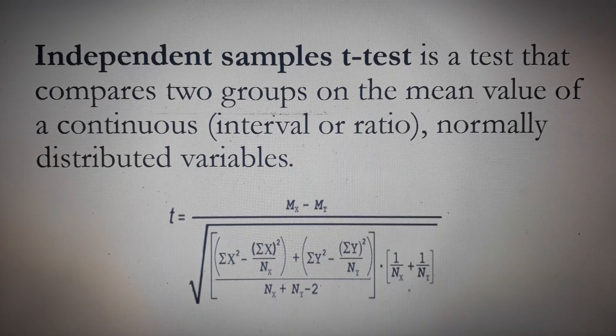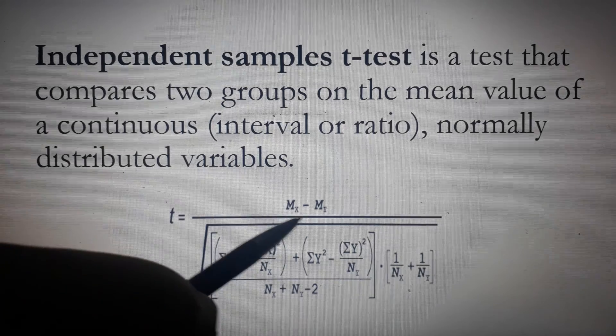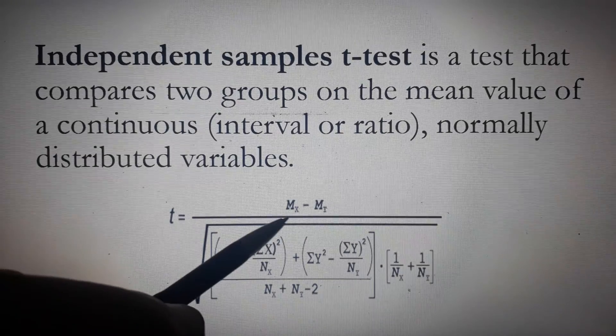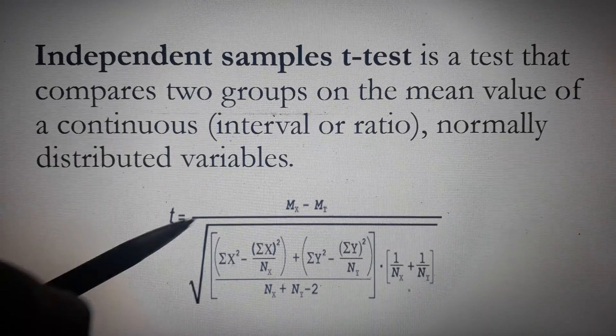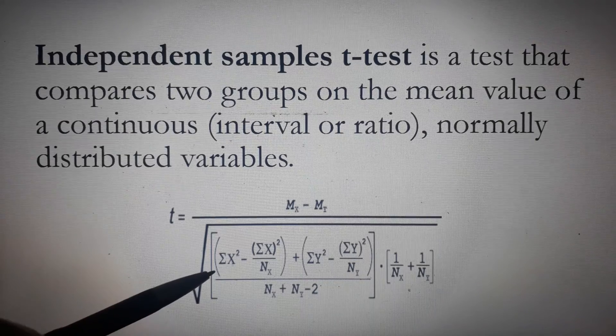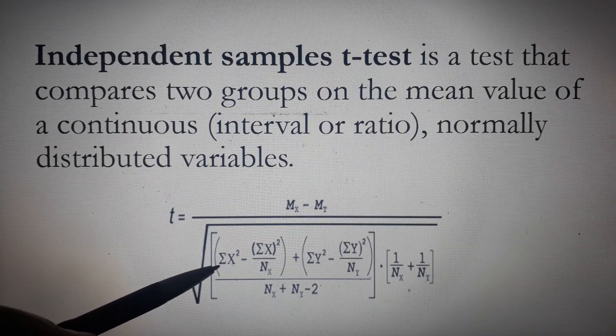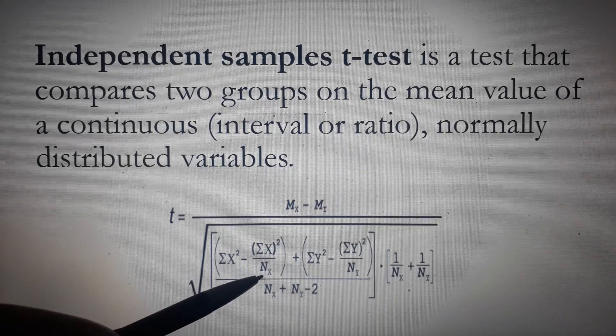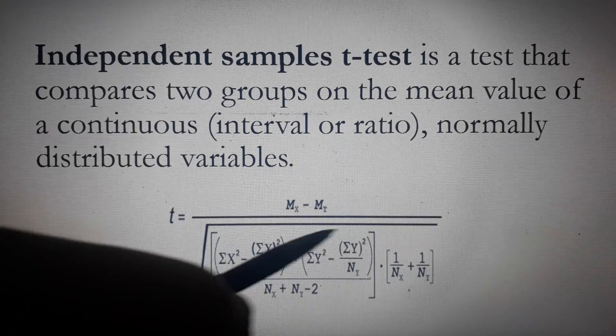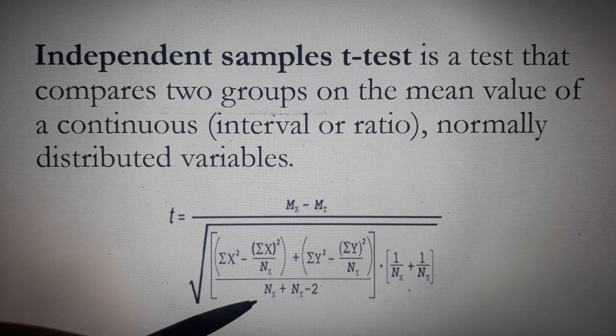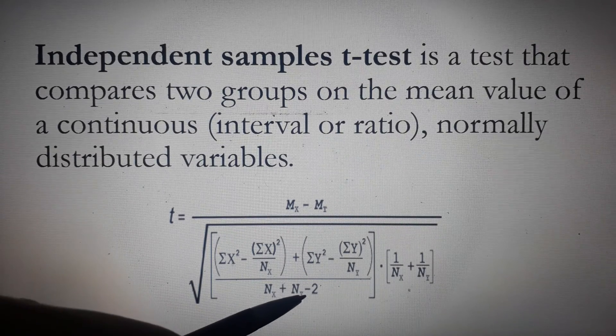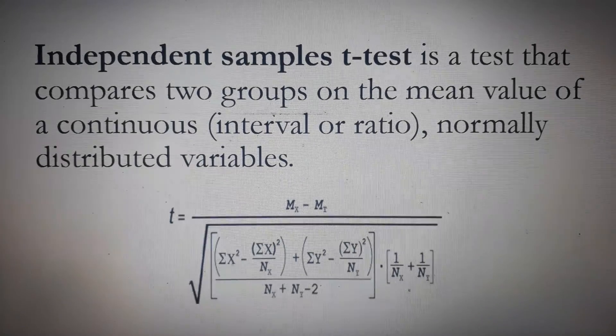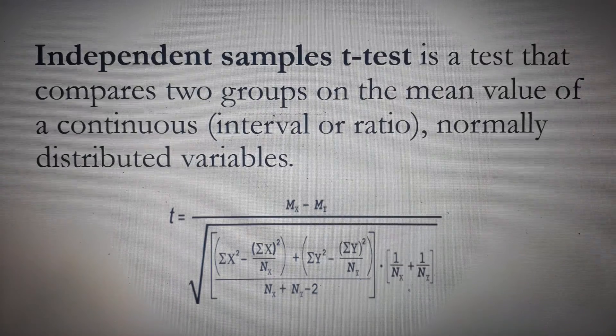The formula reads t is equal to m stands for the mean and x and y stands for the two groups. So the mean of x minus the mean of y all over square root of the quantity summation x squared minus summation x you have to square over n of x plus you do the same procedure with the group y all over n of x plus n of y minus 2 times 1 over n of x plus 1 over n of y. Let's apply the concept.